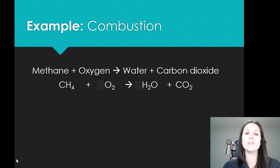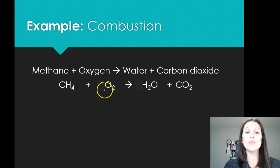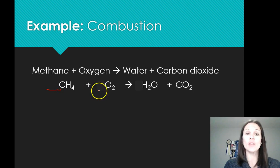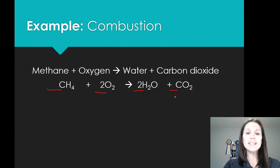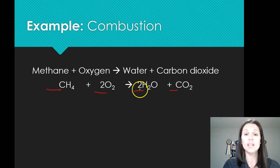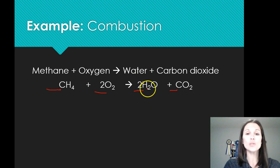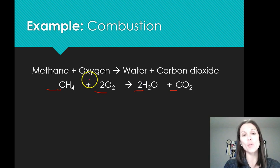The only way you can balance is by putting numbers in front of the molecules. We can only put a number in front of a molecule — we cannot change a subscript, because if you change the subscript you're changing what that molecule is. So you can put a number in front of methane, oxygen, water, or carbon dioxide. If we put a two in front of the oxygen, we now have four oxygens on the reactant side. We have two oxygens from the waters and two from the carbon dioxide — so that balances. And for hydrogens, we now have two times two, giving four hydrogens on the product side and four on the reactant side. That is now a balanced equation.